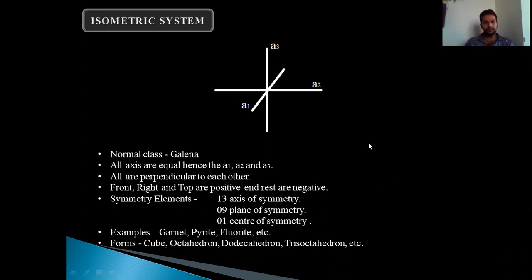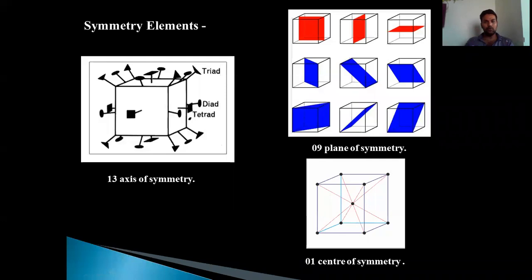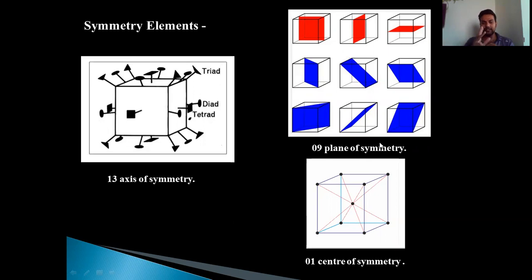Now let us see the symmetry elements of the isometric system. In the isometric system, there are 13 axes of symmetry, nine planes of symmetry, and one center of symmetry. In the diagram you can see there are 13 axes — you can count them. They include triad, dyad, and tetrad axes.